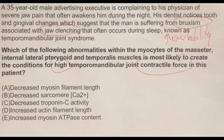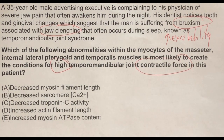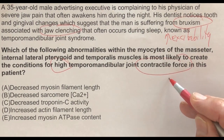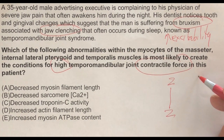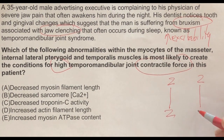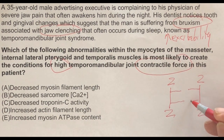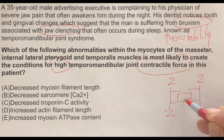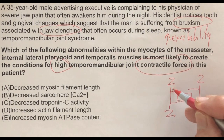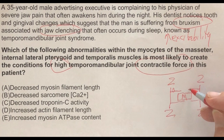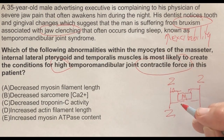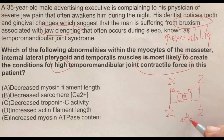Looking at the answer choices, it appears there's a mixture of structures of the sarcomere represented. We should start with a cartoon of the sarcomere. The sarcomere is the area from Z line to Z line. Attached to each Z line are thin actin filaments interdigitating with thick myosin filaments. It's the cross-bridge cycling — cross-bridge formation between the actin and myosin — that creates the active tension in the muscle.